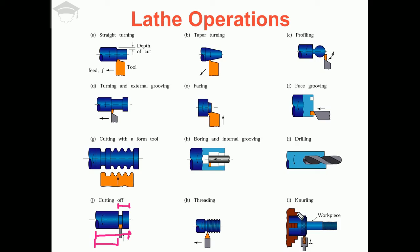Next comes the knurling operation. Knurling is performed with a special type of tool that creates various diamond-type patterns on the workpiece. I have created a separate video for the knurling operation in much more detail, so you can click on the top right corner where it appears on screen to watch that knurling video.